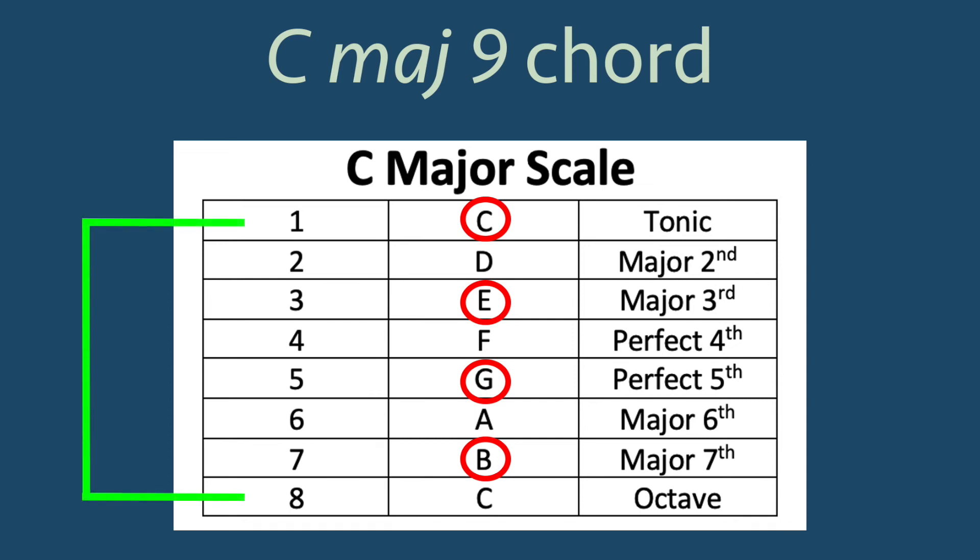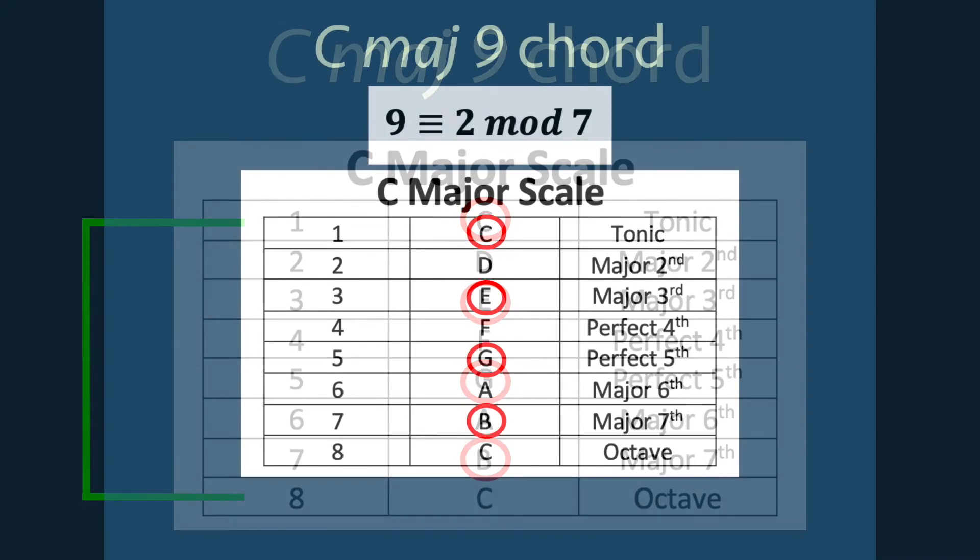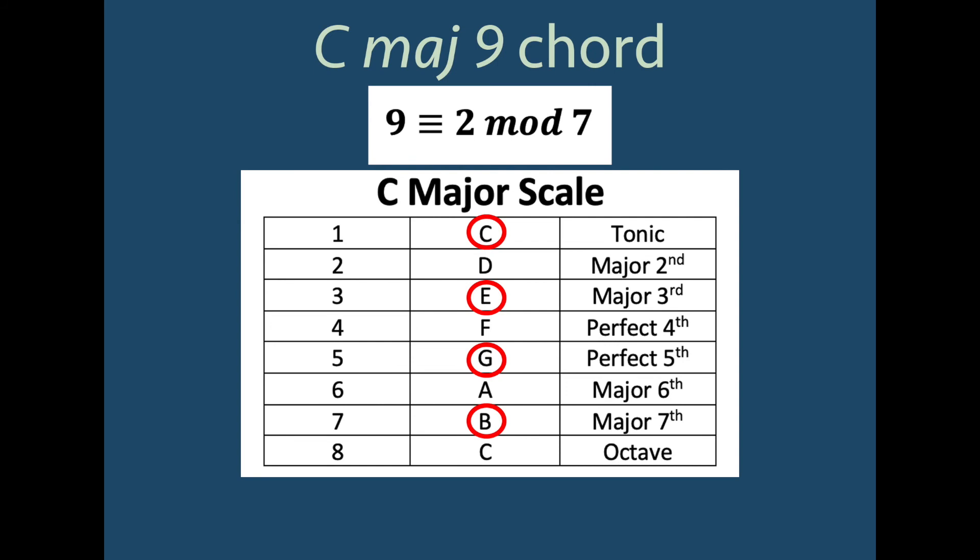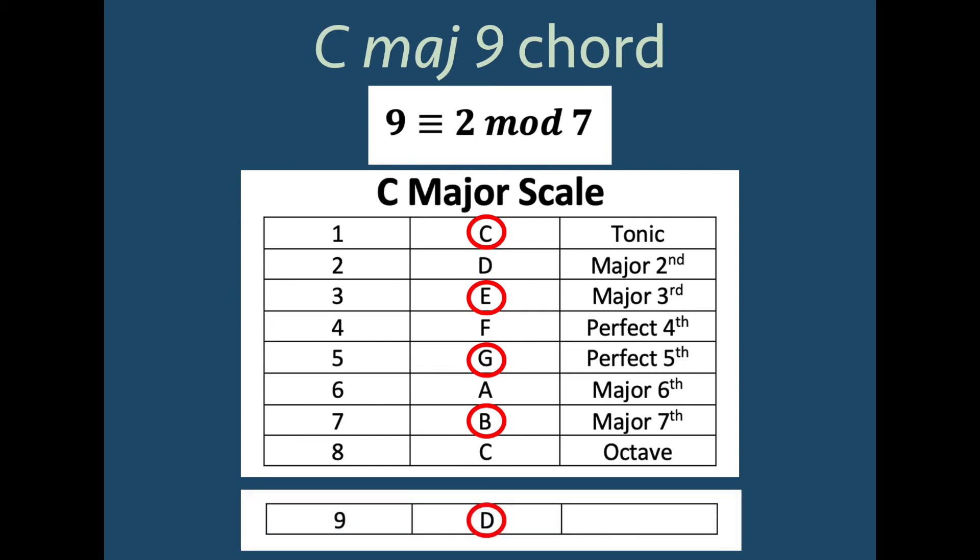If we notice that the tonic and the octave are separated by 7 steps, since 1 plus 7 equals 8, then this tells us that we can understand what note the 9th is by seeing what it is congruent to modulo 7. We can do this by subtracting 7, so 9 minus 7 equal 2. And we see that the note that is called the 9th is in the same pitch class as the major 2nd, which is D in this case. So the C major 9 chord is made of the notes C, E, G, B, D.